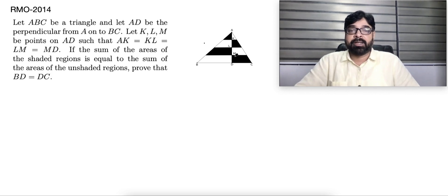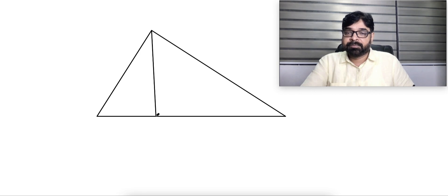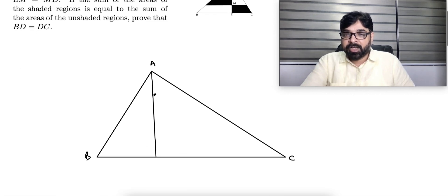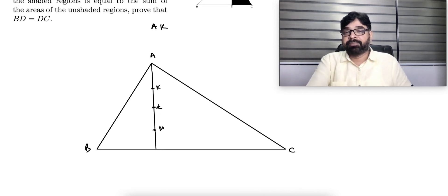So what are they saying? There is a triangle ABC and AD is the perpendicular from A to BC. K, L, M are points on AD such that AK equal to KL equal to LM equal to MD. Let me draw the picture carefully and then we'll discuss that. This is the triangle ABC and they draw perpendicular here. They take three points K, L, M equally distributed, and then they draw lines like this parallel.